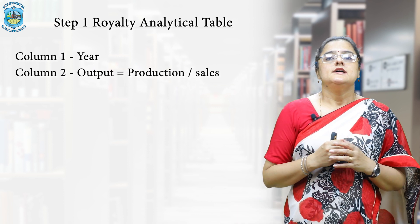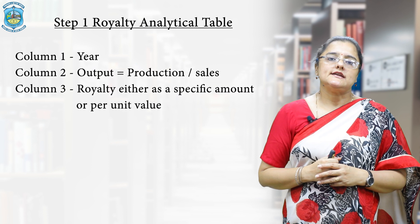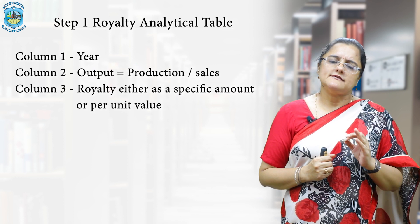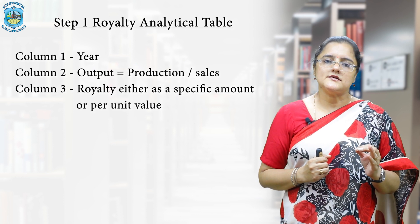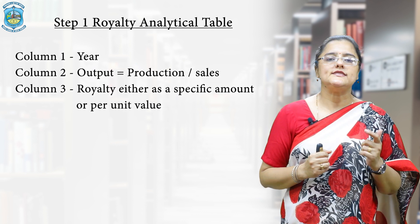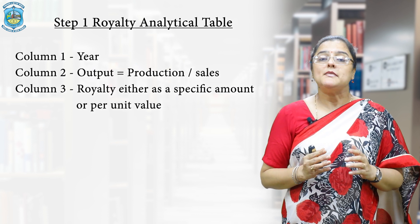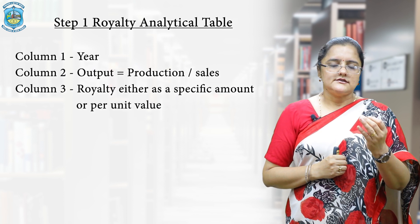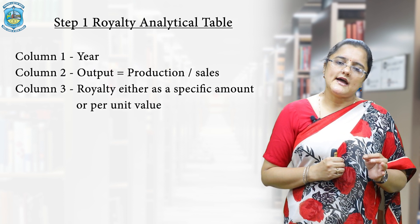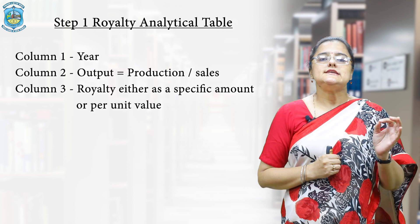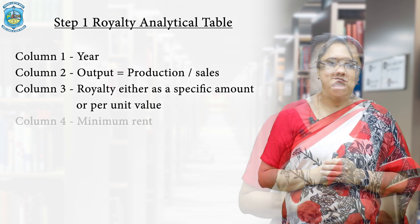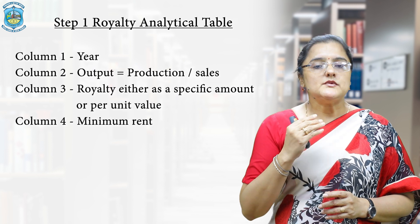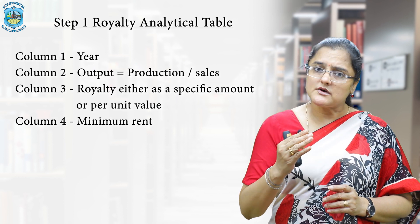Since royalty is paid on output or production, the third column is the royalty amount. Usually royalty is given as a per unit value of output, and you compute the royalty amount by multiplying output with the per unit value. In some questions, a definite amount of royalty is given — simply copy that value in the third column against each corresponding year.